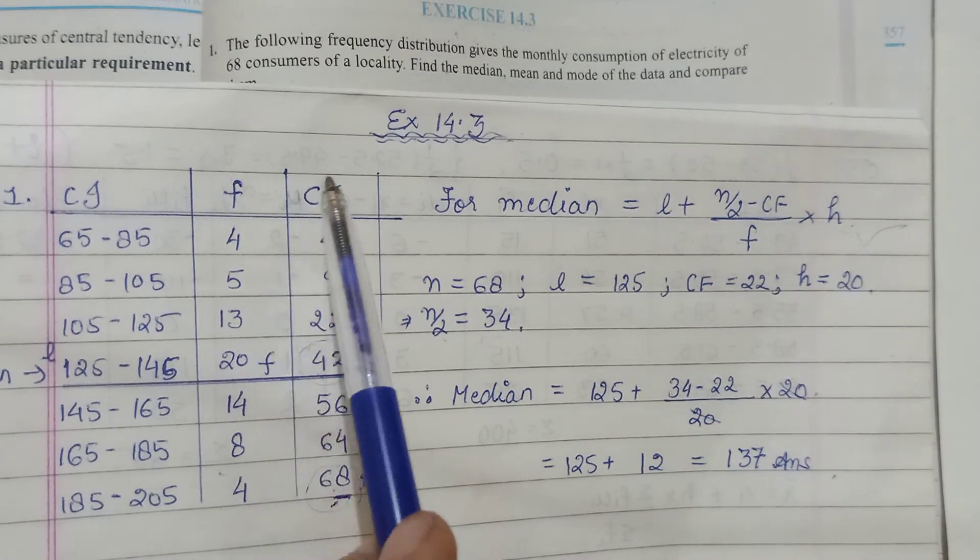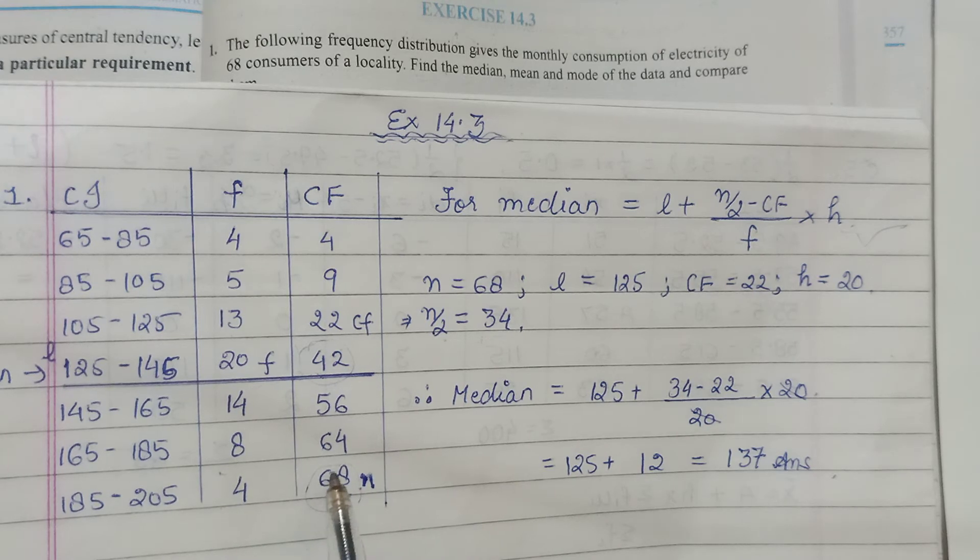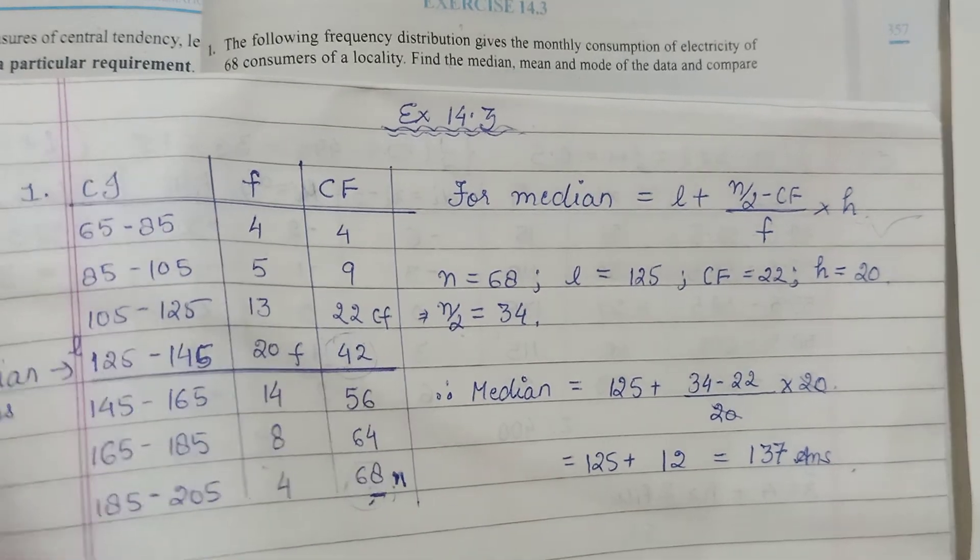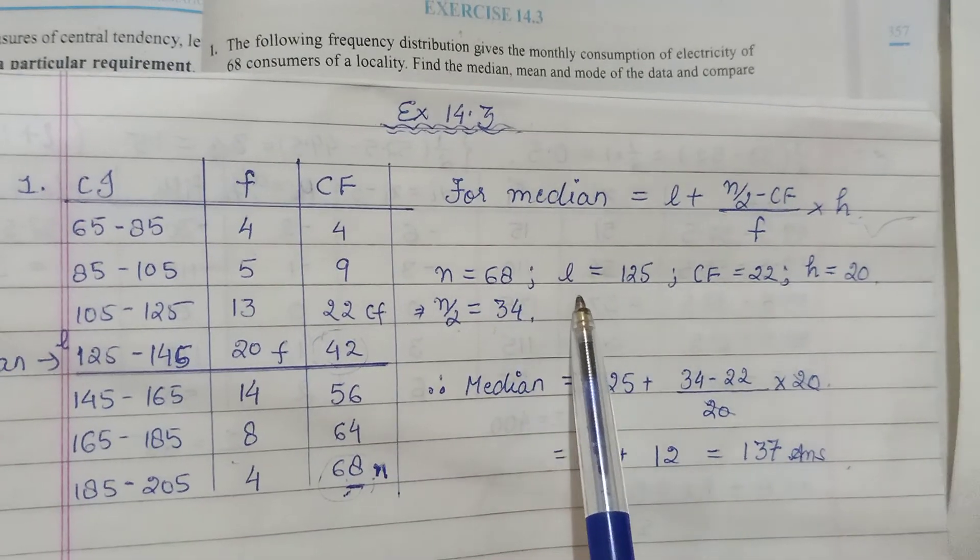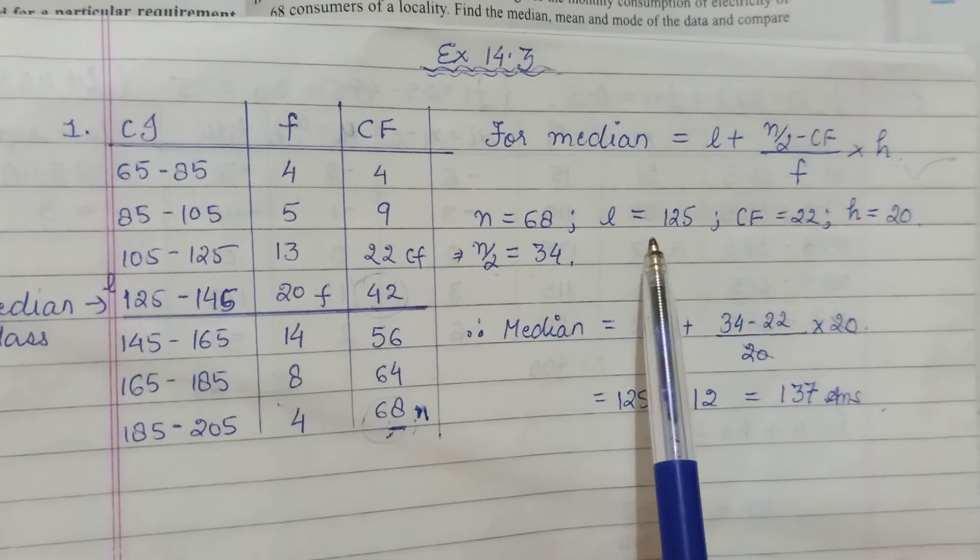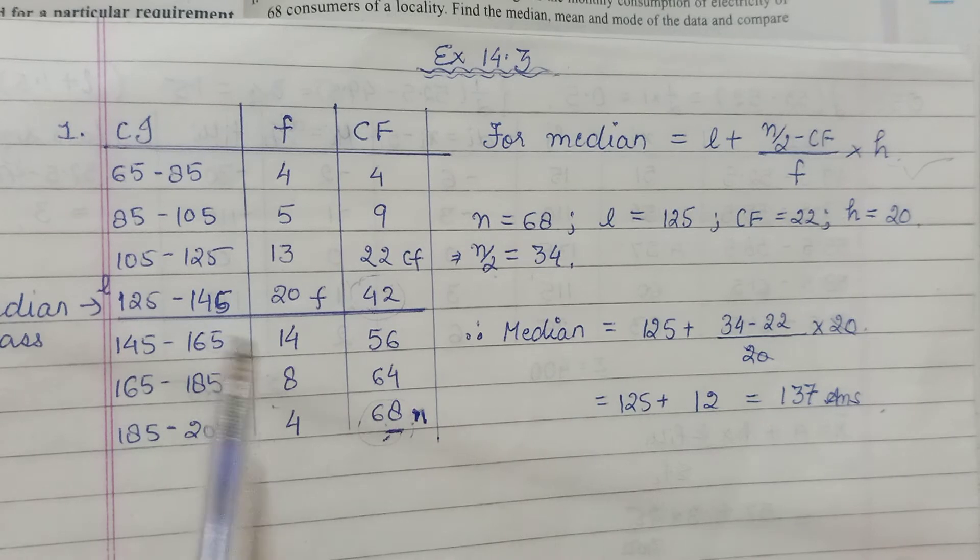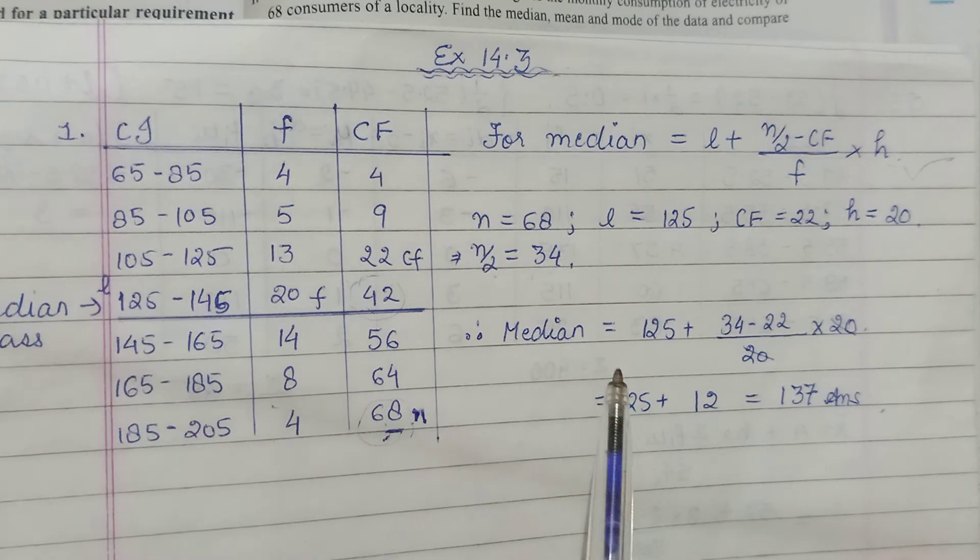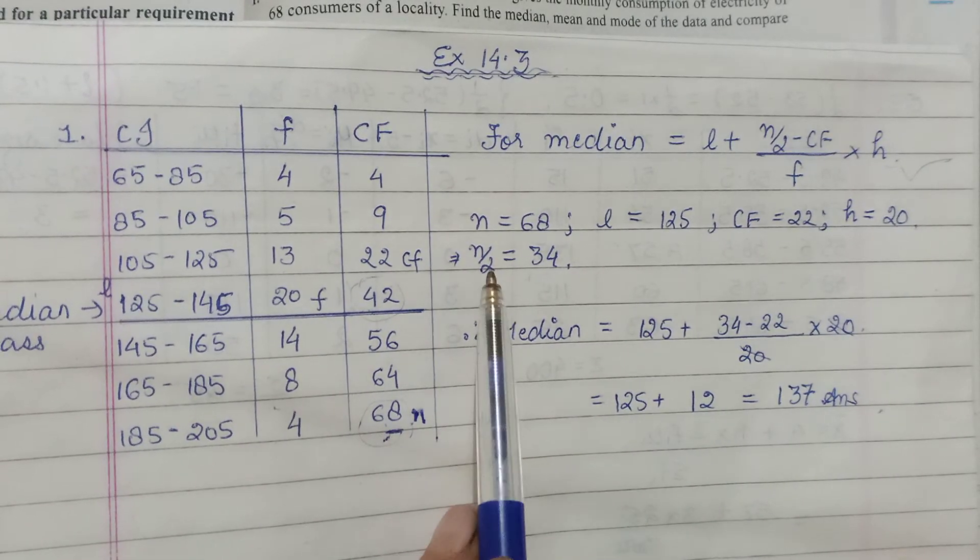That is your formula that you have to remember. After that you need to work out your CF from here. n, n by 2 will help you trace your median class, and then from there you know all the entries for this formula. And once you know that, put it in the formula.